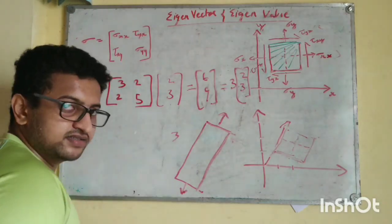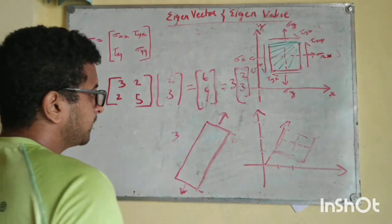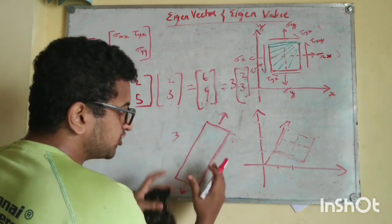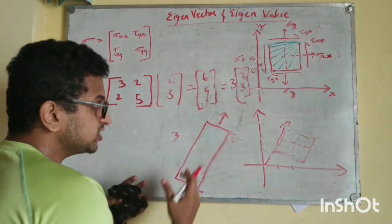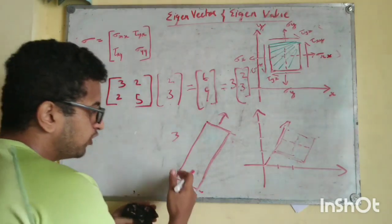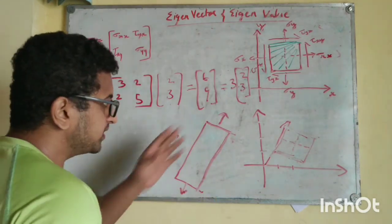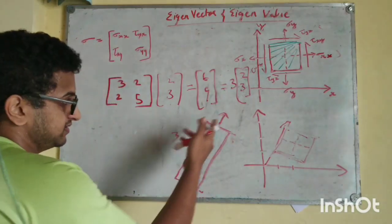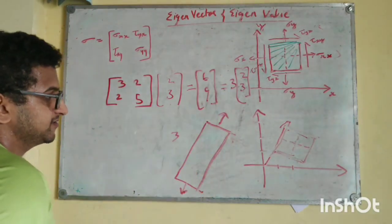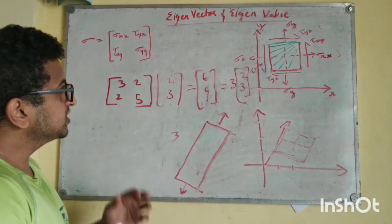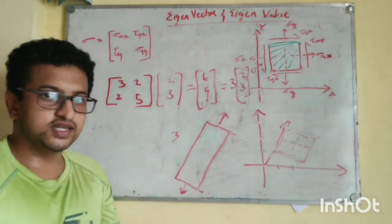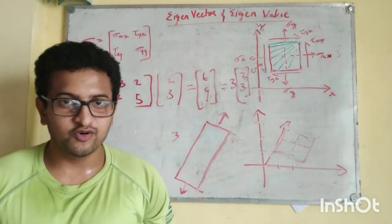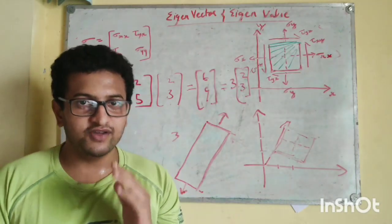We can explore that conservation concept in another video. By orienting along eigenvectors, we avoided distortion and shear stress on this object, so we only have normal stress. When you only have normal stress on such a plane, that stress is called principal stress. This is how the concept of eigenvectors and eigenvalues is applied in solid mechanics. Thank you, hope you all understood and had a very good time.